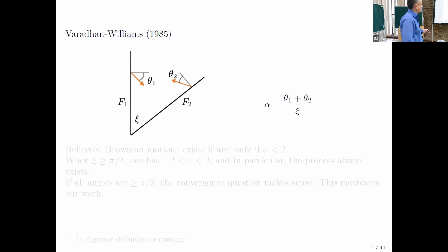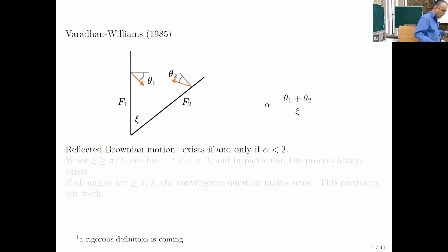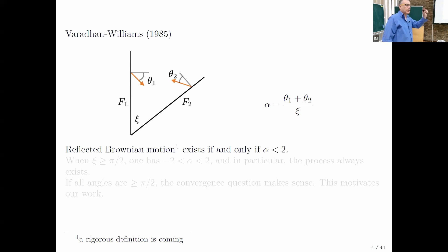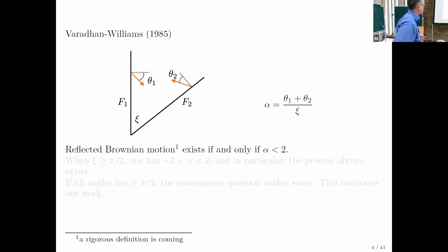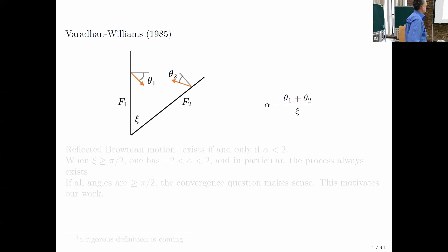One of them is that reflected Brownian motion exists if and only if alpha is strictly less than two. You may ask: what happens if alpha is two or higher? Then there's still a reflected Brownian motion if you're willing to give up the condition that it spends zero Lebesgue measure time on the boundary — namely, if you allow it to stay at the corner, yes, such a process exists. But I will not call it a reflected Brownian motion.